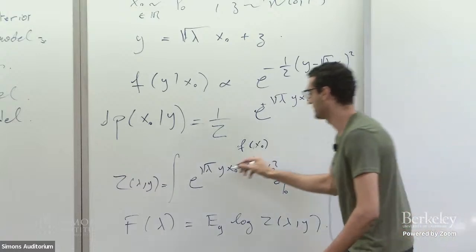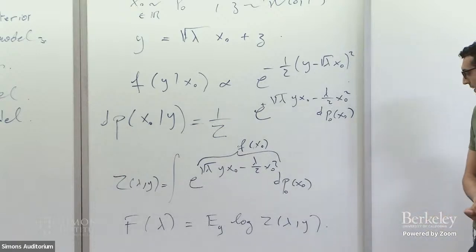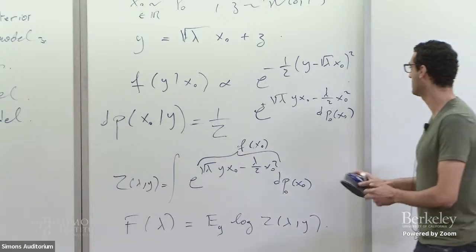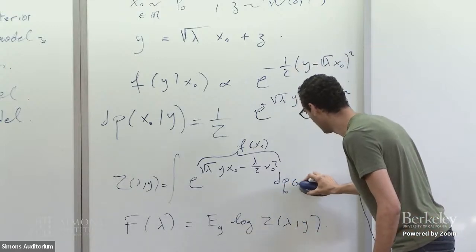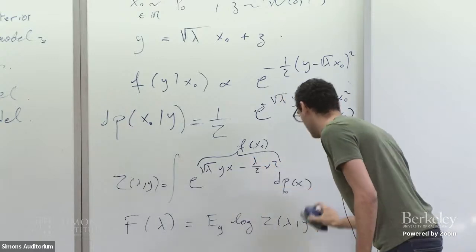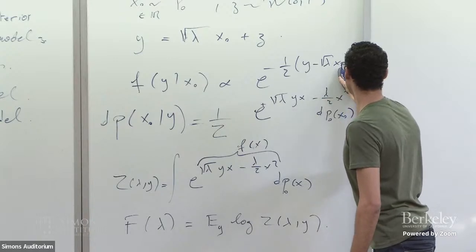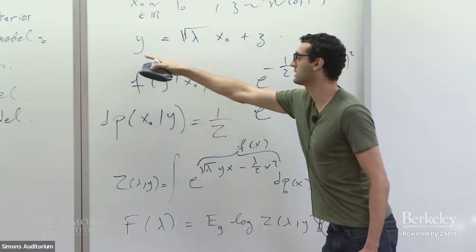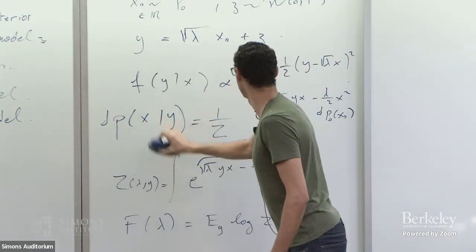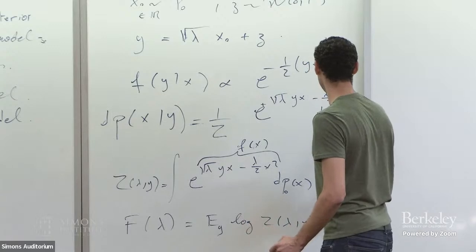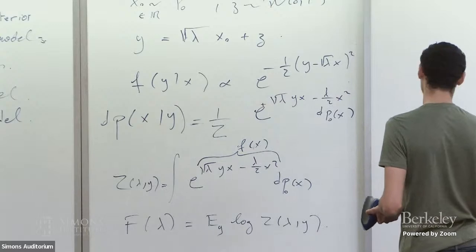For notation: the Hamiltonian is this specific function, and whenever I integrate with respect to x₀ I'll drop the zero subscript to distinguish the integration variable from the actual signal x₀ that enters the definition of y.